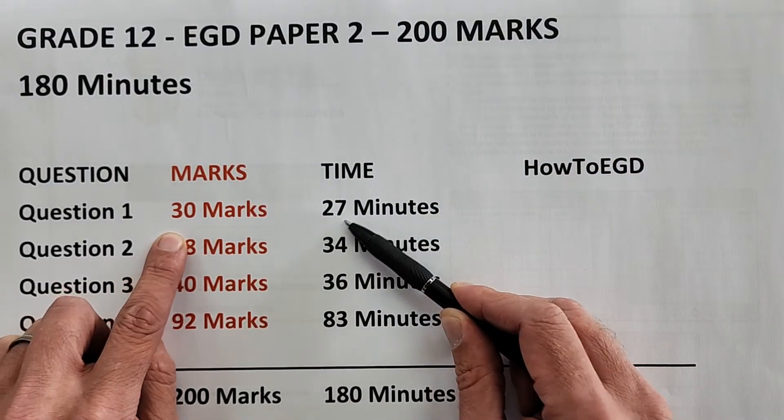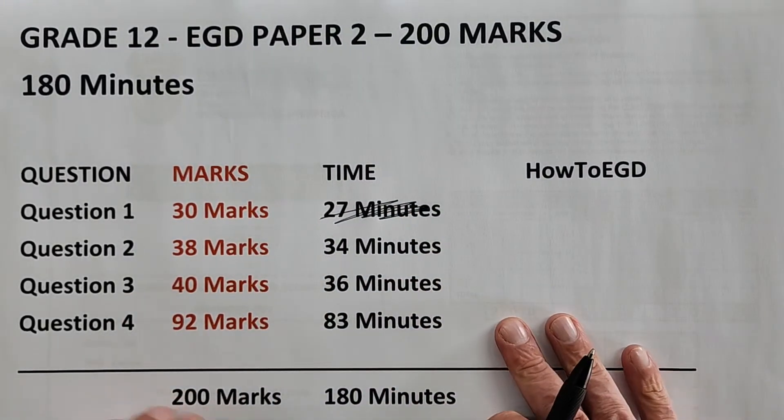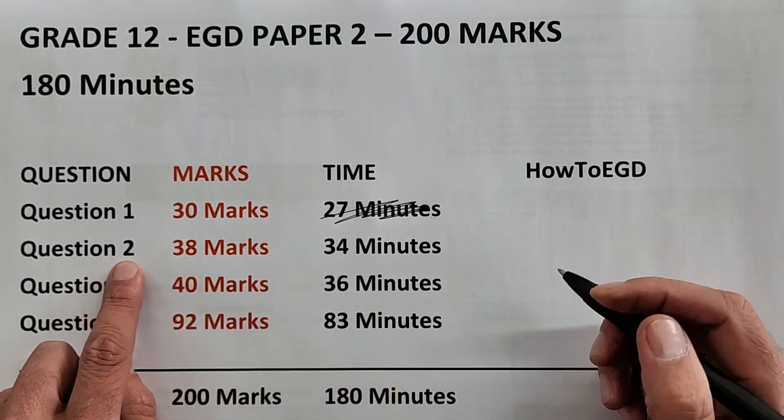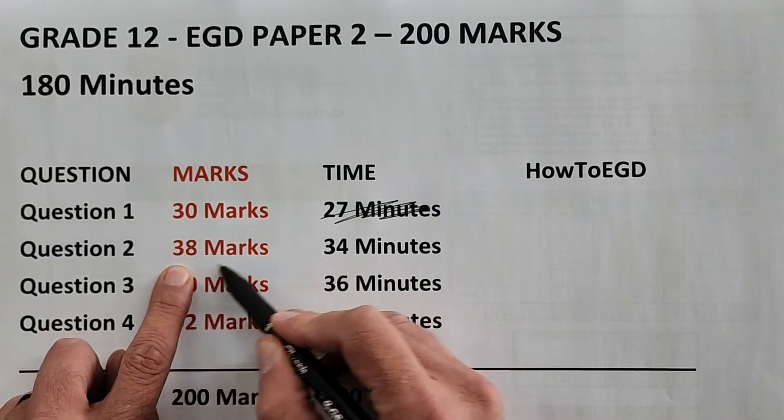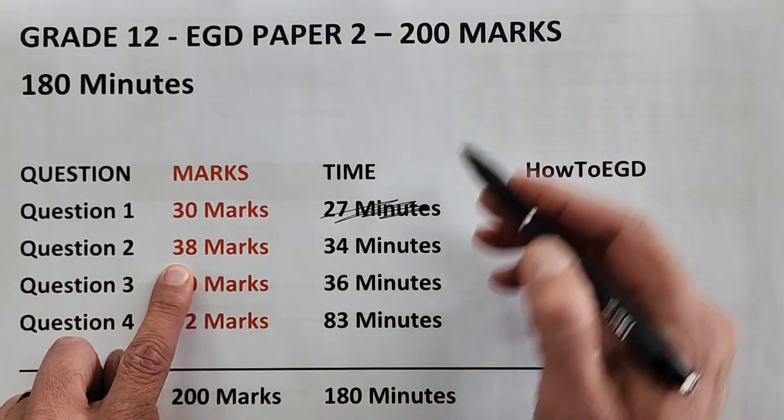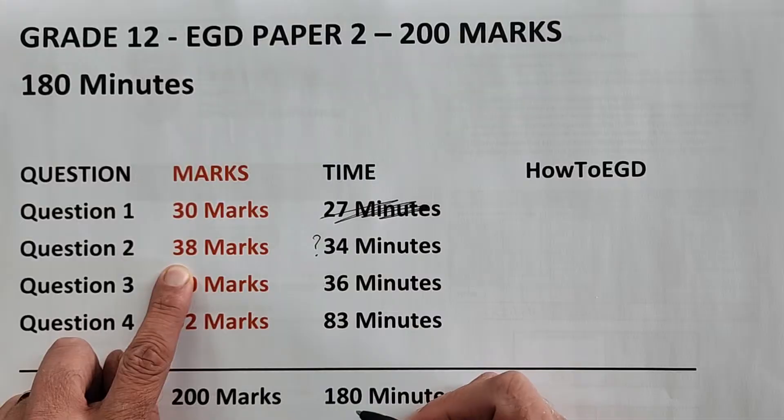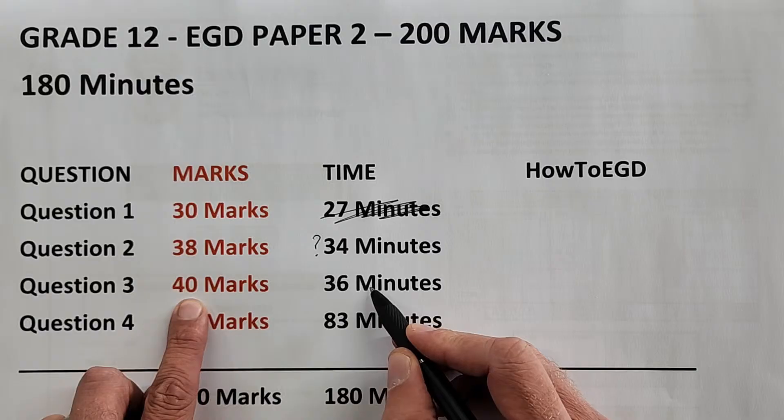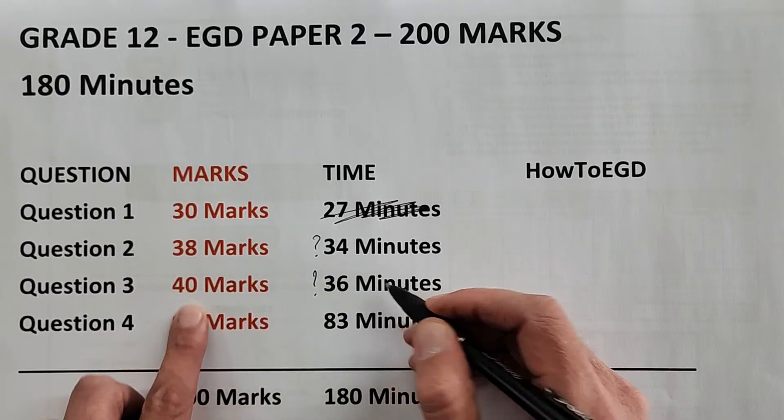Question 2 is the loci of a mechanism and the loci of a cam mechanism. The 38 marks allocated is 19 for one and 19 for the other, giving 34 minutes. Question 3 is your isometric—in the past that's been 40 marks, giving you 36 minutes. Depending on how quickly you draw these, we could ask another question on the time allocated.